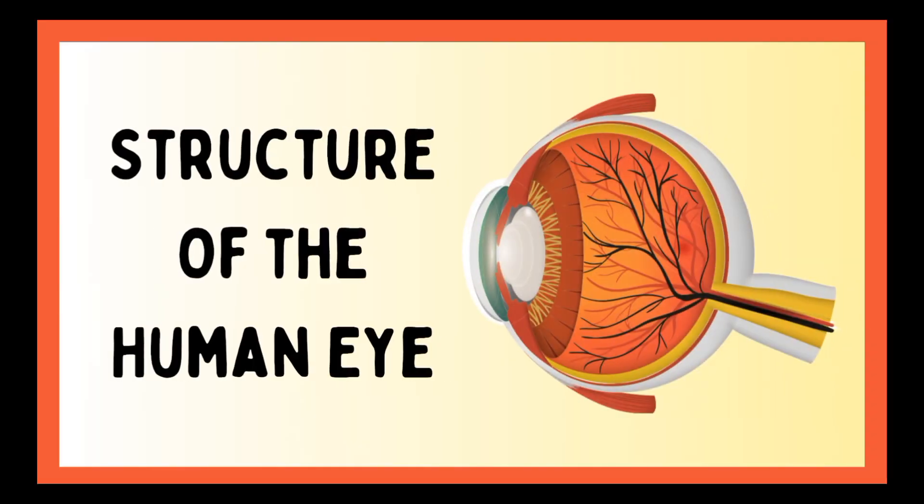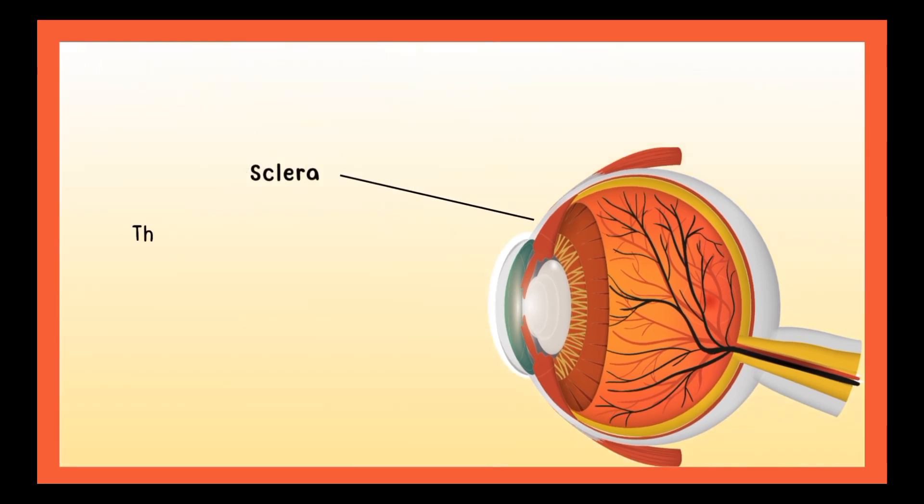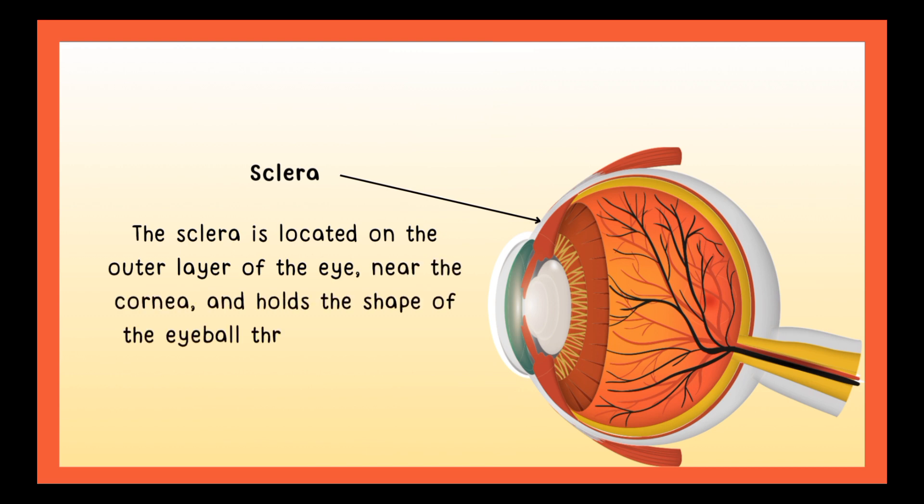Structure of the human eye. The sclera is located on the outer layer of the eye near the cornea and holds the shape of the eyeball through its strong fibers.